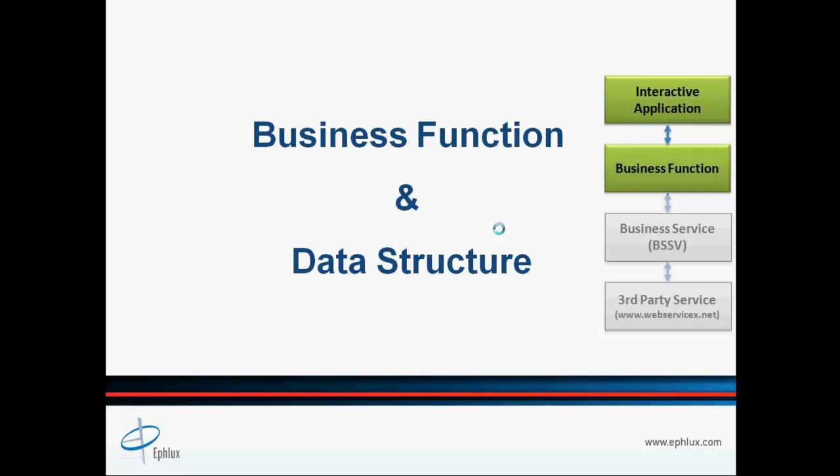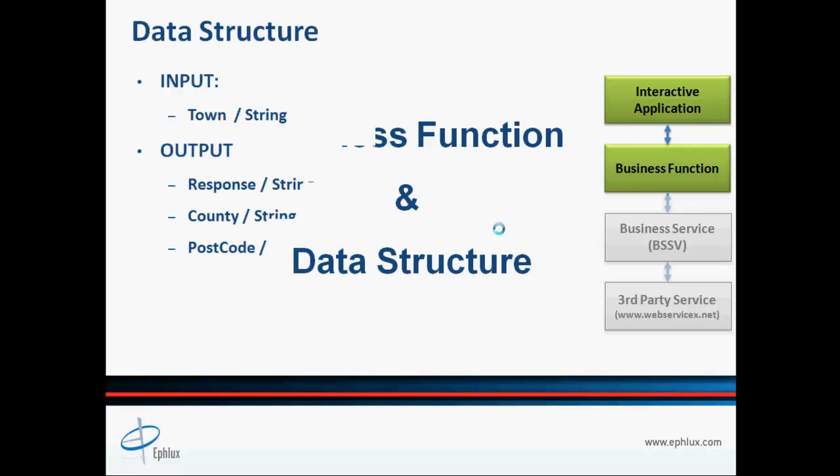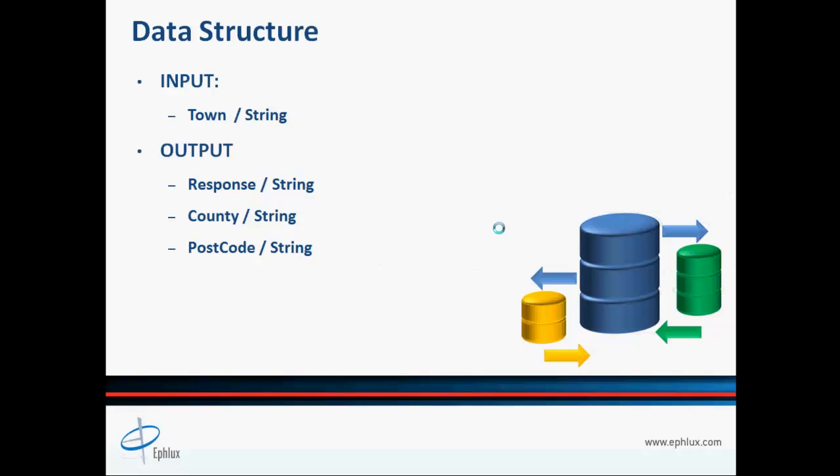In this part, we will concentrate on creating our data structure for the business function, and in part two we'll continue with the business function. As outlined earlier, we need one input parameter — the town name as a string — along with three output parameters: response, county name, and postcode. The county name and postcode information will be received from the external service provider, while we will formulate the response parameter ourselves based on successful or unsuccessful execution.